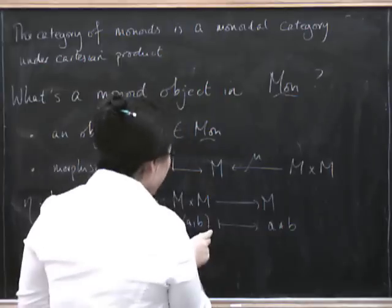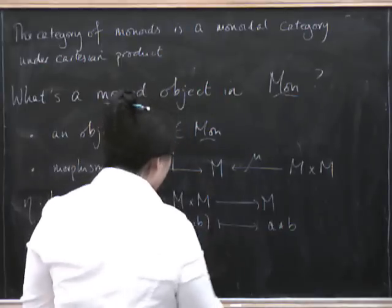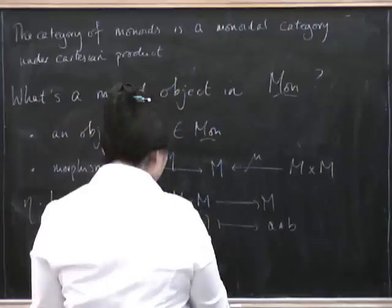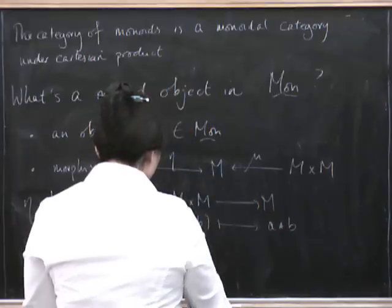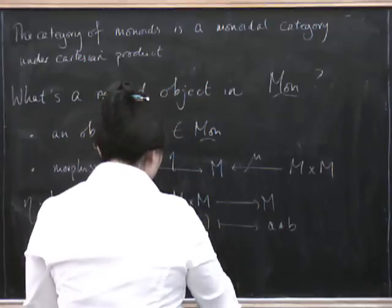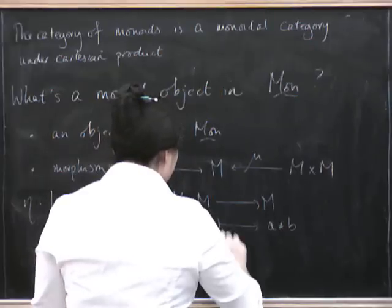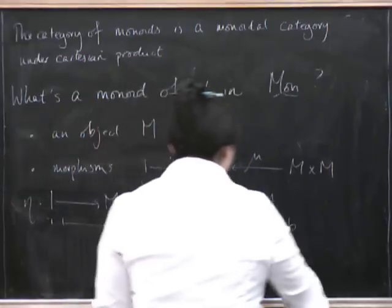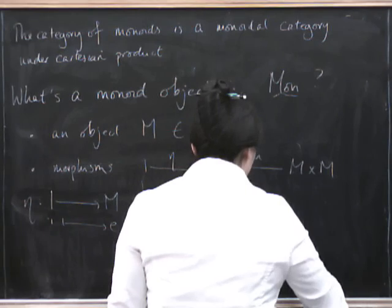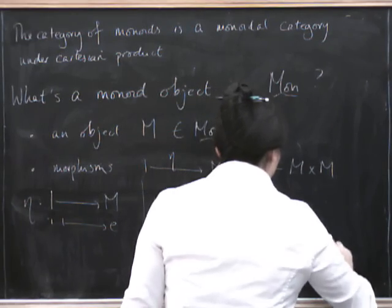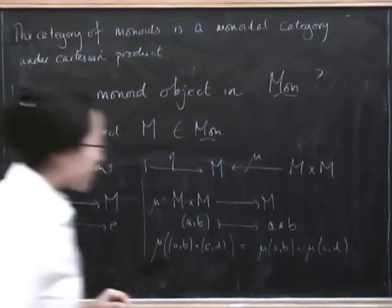So that says if we take two things and multiply them in here, what it says is that mu of (A, B) composed with (C, D) has to equal mu of (A, B) composed with mu of (C, D). So let's see what that is.